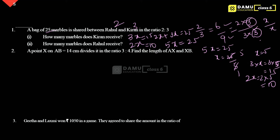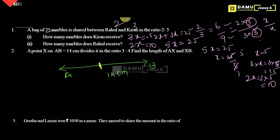Next one. A point X on AB of 14 centimetres divides it in the ratio 3 is to 4. Find the length of AX and XB. So let's take this as the line AB, which is 14 centimetres. The X point divides it into a 3 is to 4 ratio.